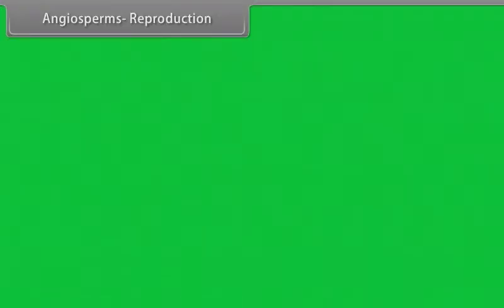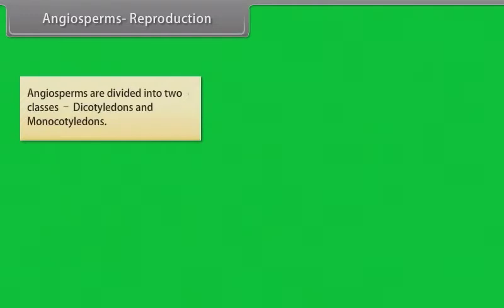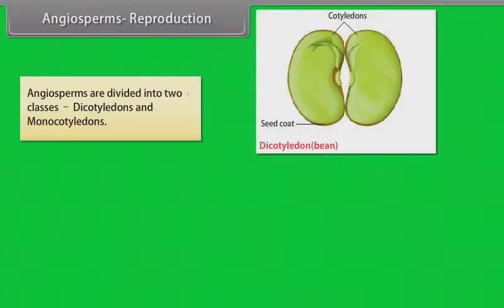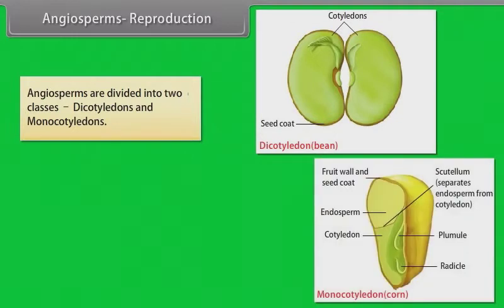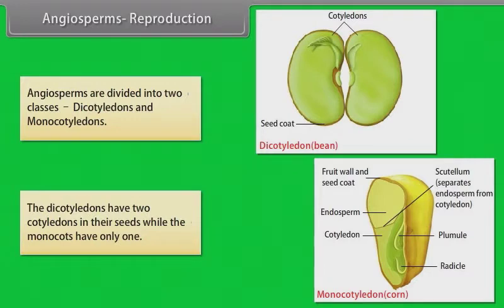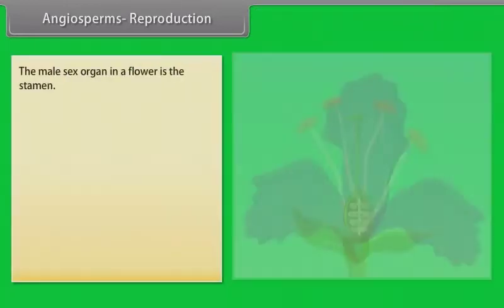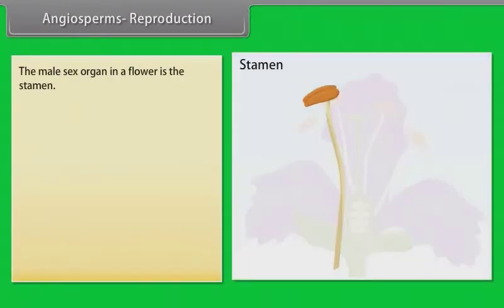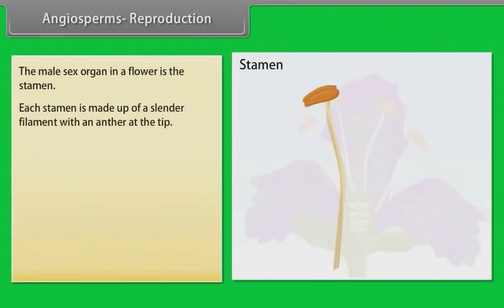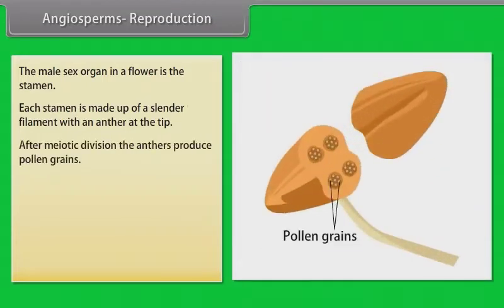Reproduction in Angiosperms. Angiosperms are divided into two classes: Dicotyledons and Monocotyledons. The dicotyledons have two cotyledons in their seeds while the monocots have only one. The male sex organ in a flower is the stamen. Each stamen is made up of a slender filament with an anther at the tip. Meiotic division of the anther produces pollen.